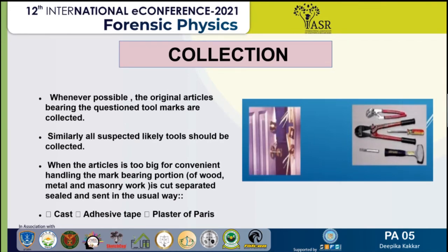Whenever possible, the original articles bearing the questioned toolmarks are collected, along with all suspected tools. When articles are too large for convenient handling, the mark-bearing portions of wood, metal, or masonry are cut, separated, sealed, and sent in the usual way. If the toolmarks cannot be removed, collection is done through casting, through adhesive tape similar to fingerprinting, or through POP — plaster of Paris.